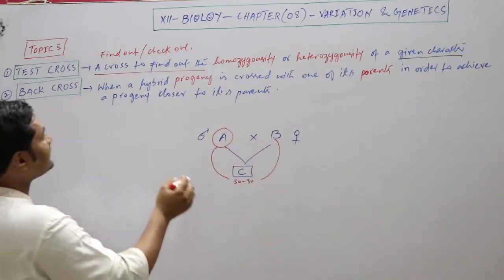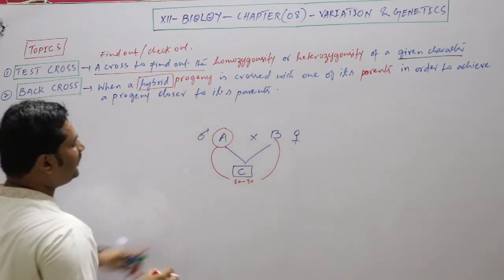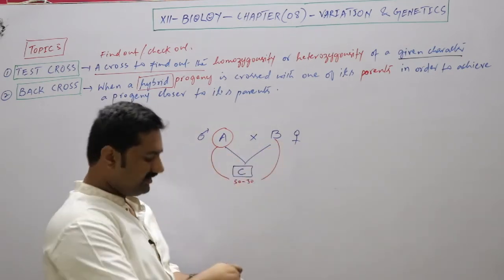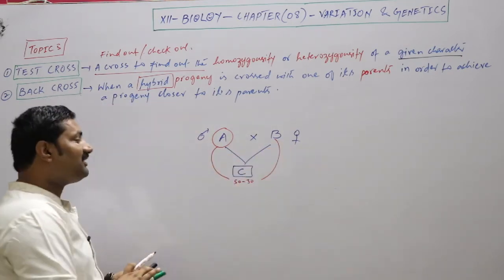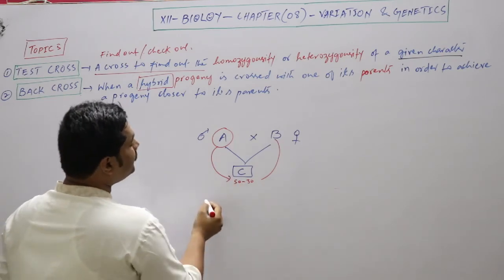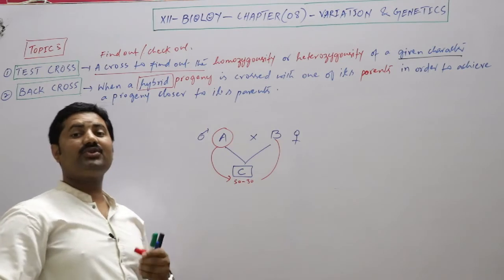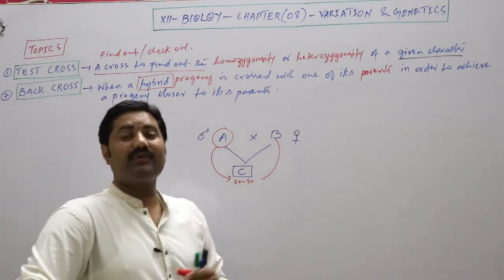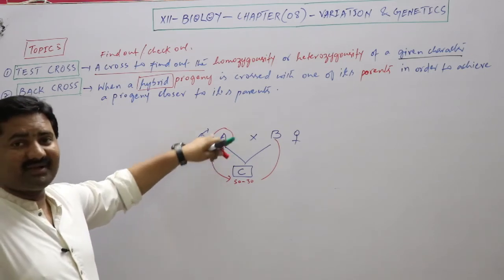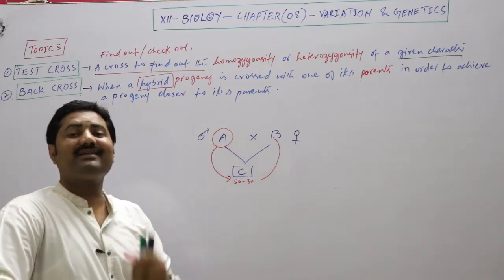Now this hybrid progeny C has characters from both father and mother. If you want a progeny that is more closer to A — the target is A, that nice racing horse — you need to concentrate those characters. You have a hybrid C, which is male or female.